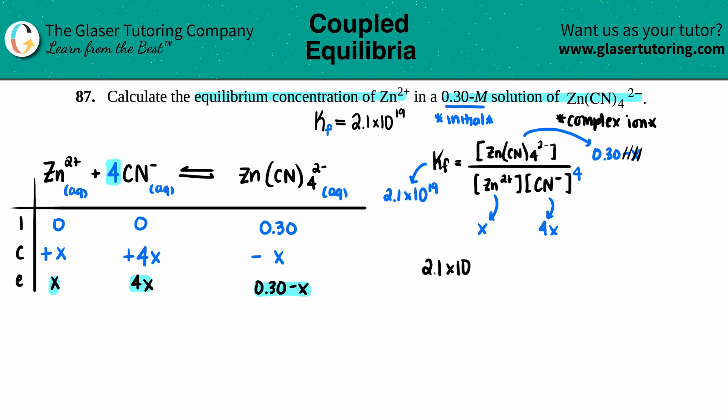2.1 times 10 to the 19th equals 0.30 divided by x and then 4x raised to the 4th. Let's evaluate 4x to the 4th. This exponent means you have four 4x's being multiplied by each other. Multiply the numbers first: 4 to the 4th is 256, and then you have 4 x's, so that's x to the 4th. This simplifies to 256x⁴.